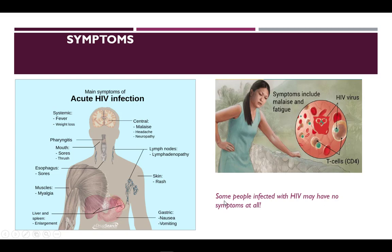Within a few weeks of HIV infection, a person may develop flu-like symptoms such as fever, sore throat, and fatigue. These symptoms will go away, and often the person has no idea that they are infected unless they get a blood test for HIV. After initial symptoms, the disease is often asymptomatic until it progresses to AIDS, which on average can take about seven to ten years without medication.